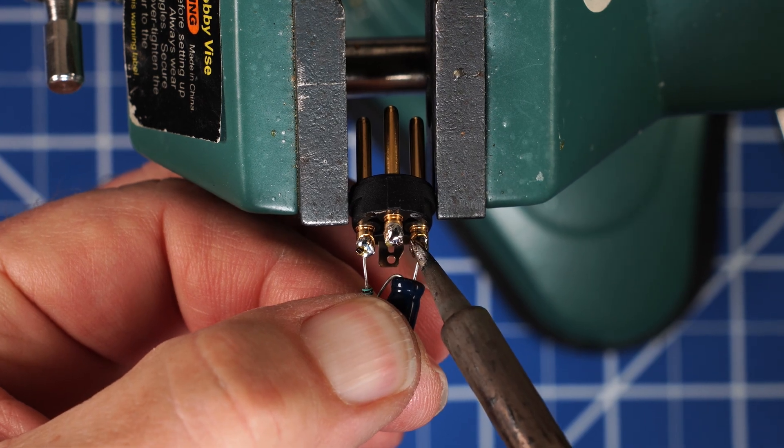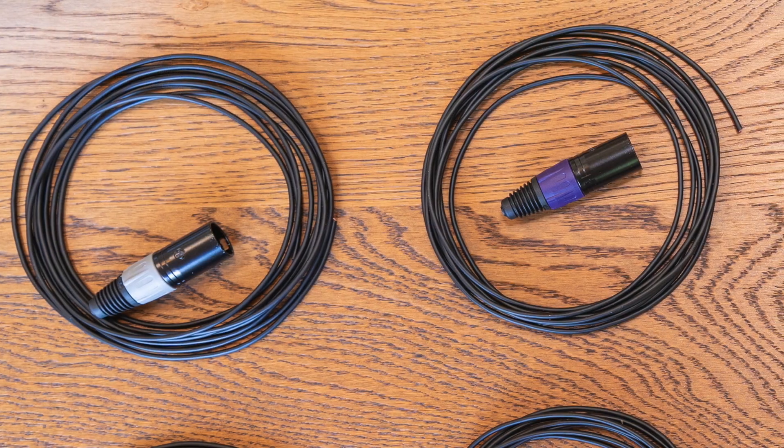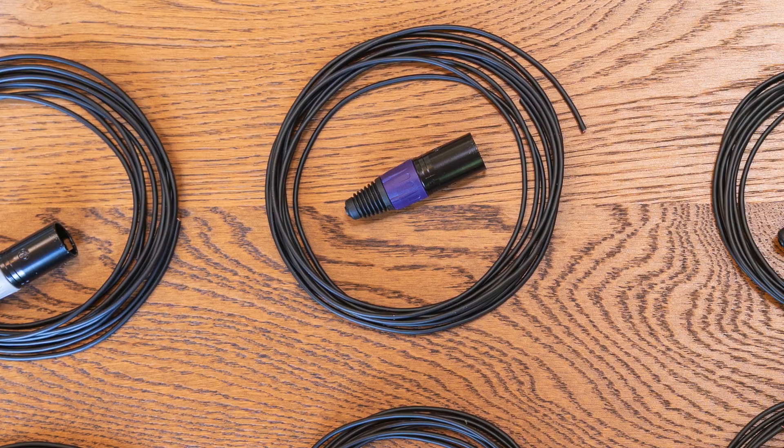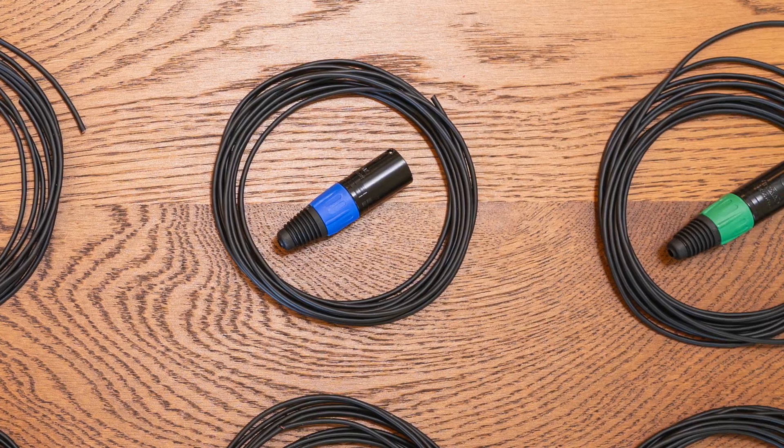Place the XLR connector in a small hobby vise and tin the solder cuffs for pins one, two, and three. Solder the resistor to pin one and the capacitor to pin two. Cut eight pieces of Mogami 2697 to 12 feet long. You can use a different length, but this is what I've found to be most useful.